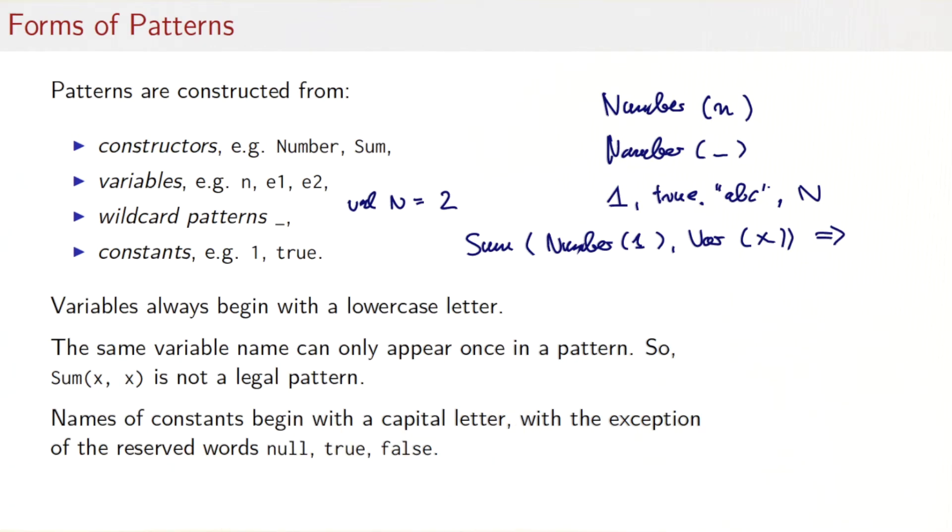So here's some of the fine print. One tricky bit is how do we distinguish a variable such as n, which can match anything, from a constant such as n, which in this case matches just the number 2 and nothing else. Syntactically, we need to find a way to distinguish one from the other. So the convention Scala uses here is that variables always must begin with a lowercase letter, whereas constants should begin with a capital letter. The only exceptions here are the reserved words null, true, and false. But these are literals that the compiler knows about. There's another restriction on variables, and that's that the same variable name can only appear once in a pattern. So for instance, Sum(x, x) is not a legal pattern. You'd have to write Sum(x, y) instead.